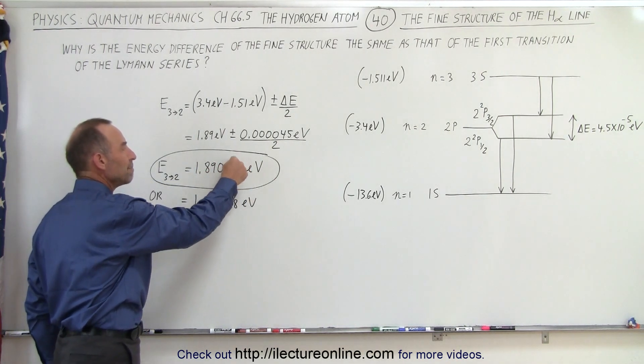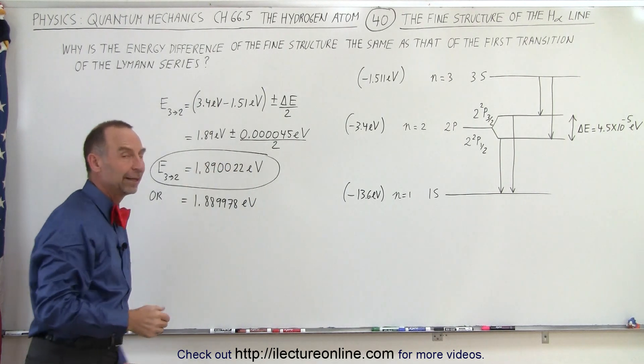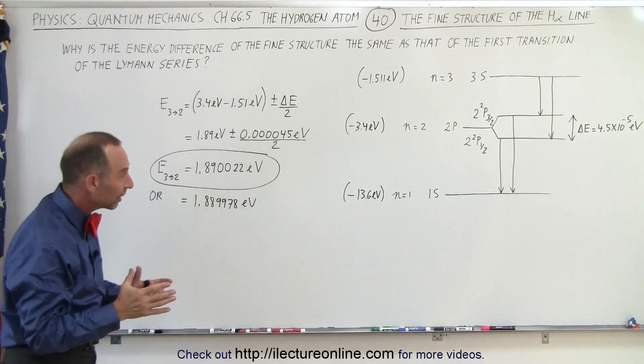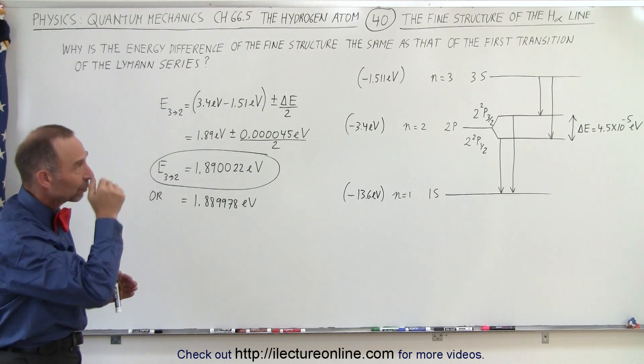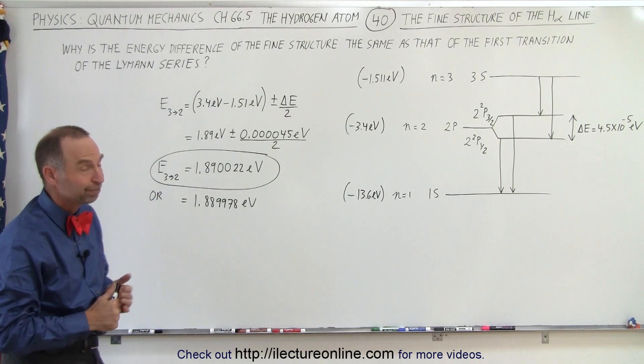So you can see it's a very minor change in the existing jump but it's big enough that we can actually see it and that's what causes the fine line structure. That's how it's done.